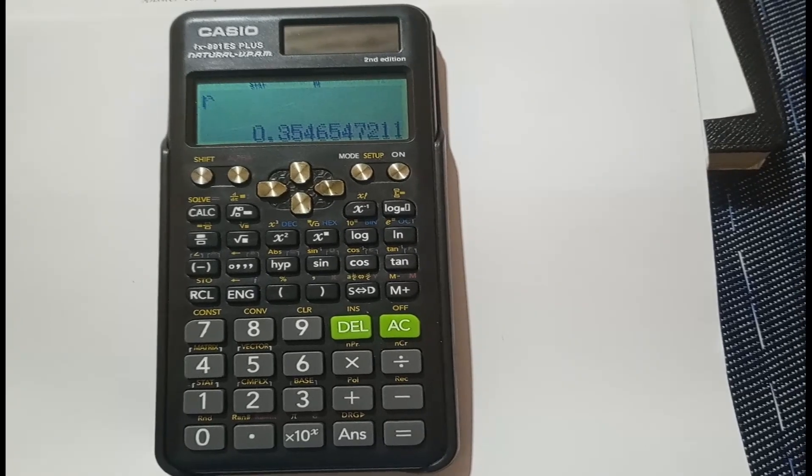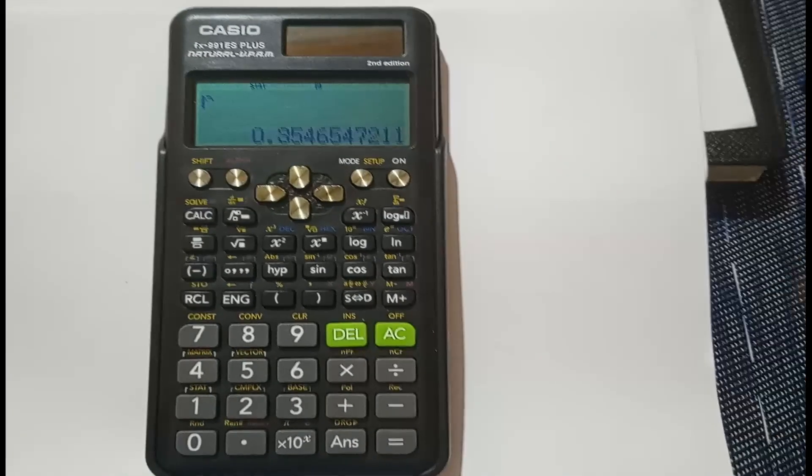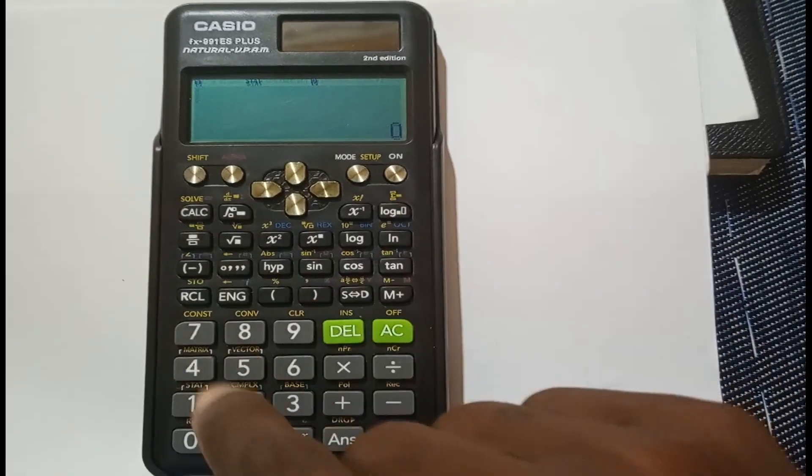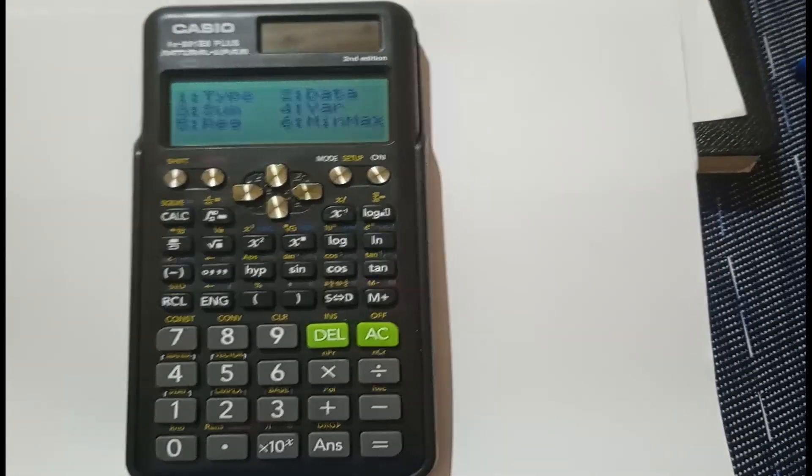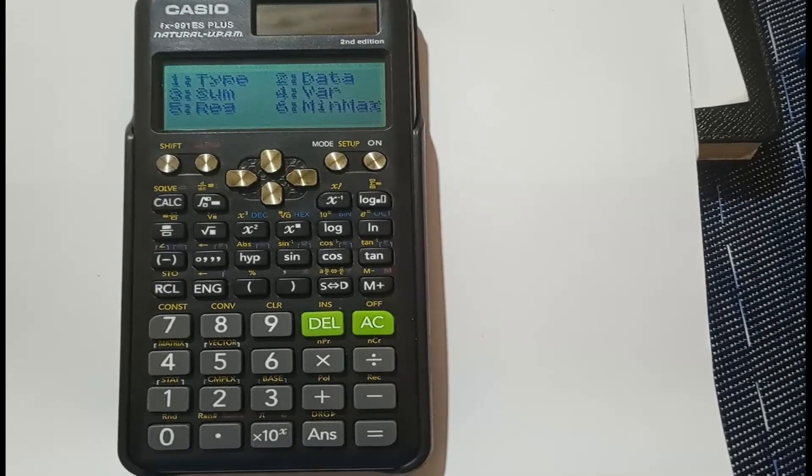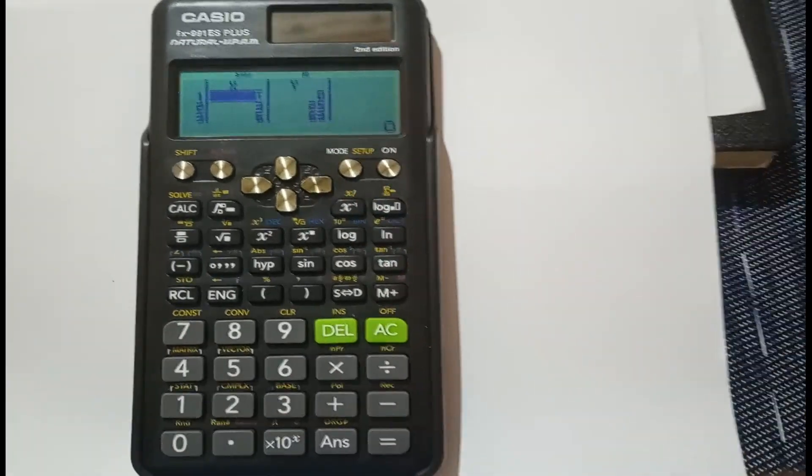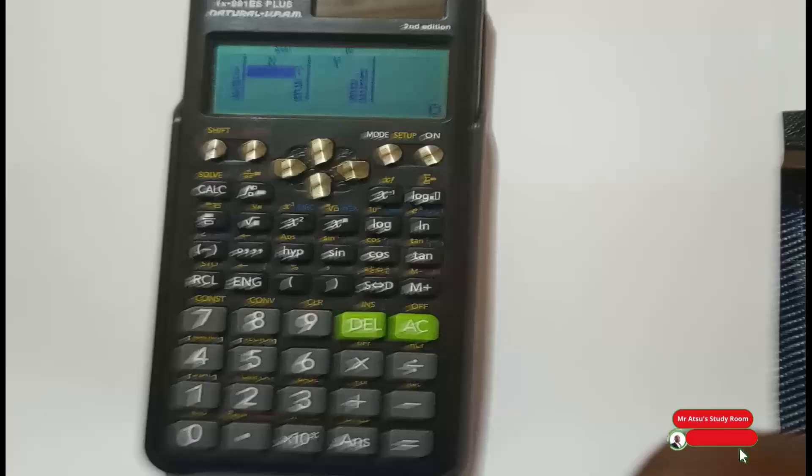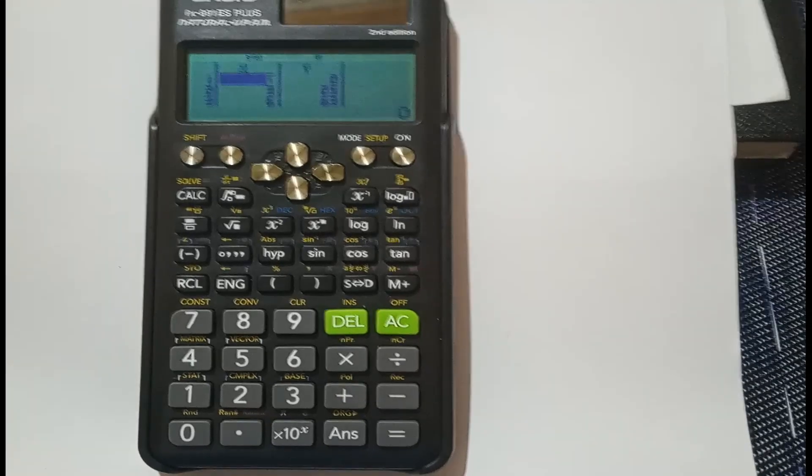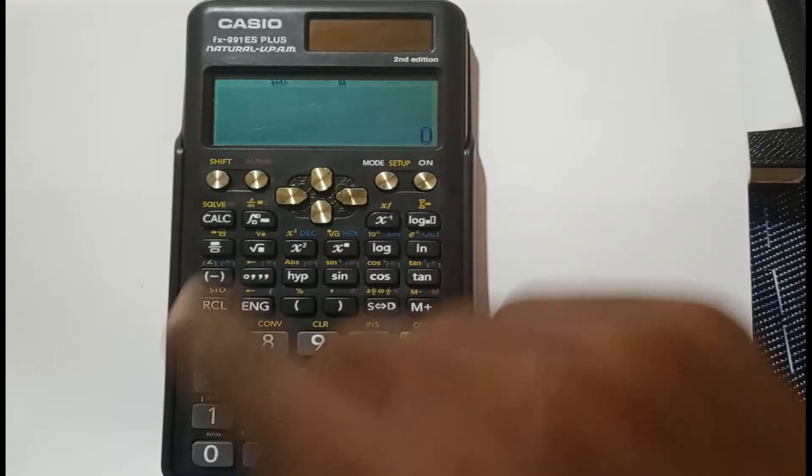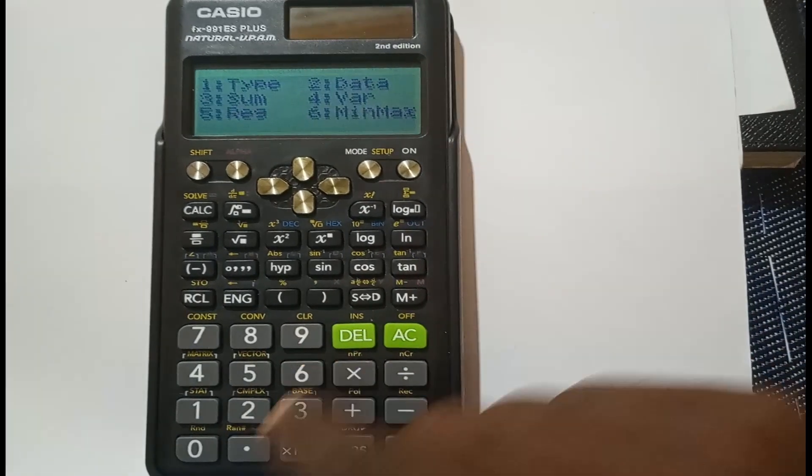You can verify your answers using the calculator. Press AC, go back to SHIFT, and the menu options come again. The TYPE allows you to enter data or change variables. For example, if I press 2 right now, it brings back our table we've entered. If I want to enter another table, I just enter the new values. Now I'll go back to SHIFT 1 for statistics, then to number 4 which is VAR.